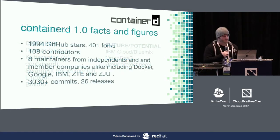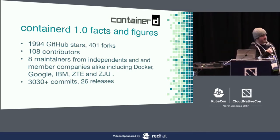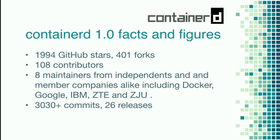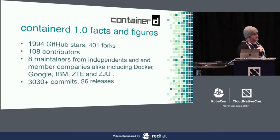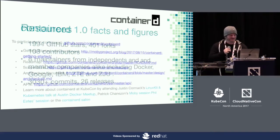A few facts and figures about the ContainerD project: 1,994 GitHub stars, 401 forks, 108 contributors — roughly 87 contributed to ContainerD 1.0, which is really cool. We have eight maintainers from independent contributors and member companies including Docker, IBM, ZTE, and ZJU, as well as 3,030 commits and approximately 28 to 29 releases.